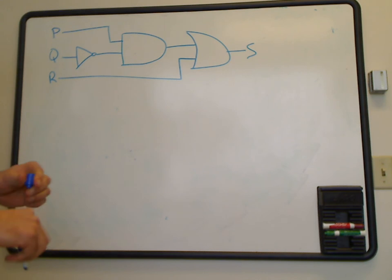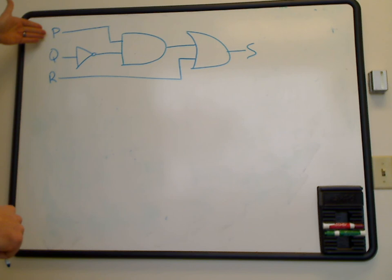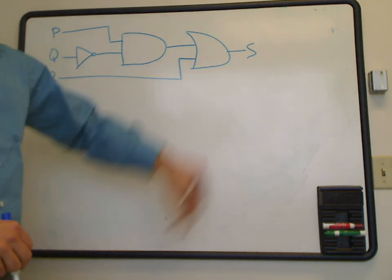So the best way to go about doing this is to start out by observing the circuit that we have. We have inputs P, Q, and R, and then we have output S.